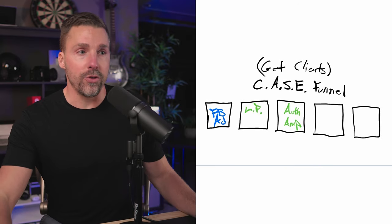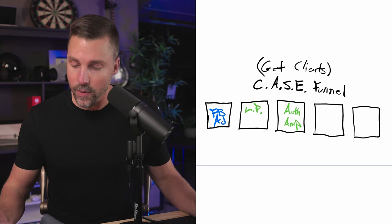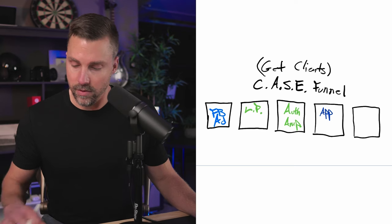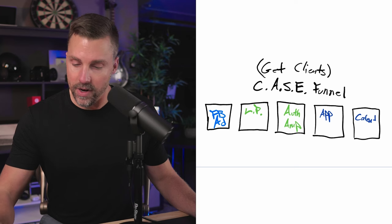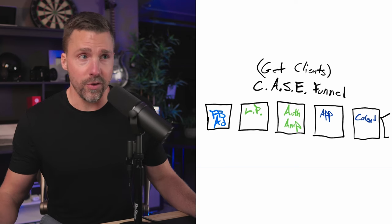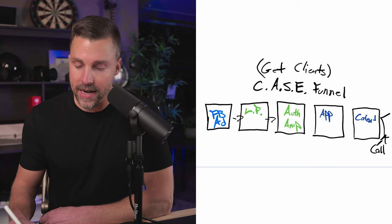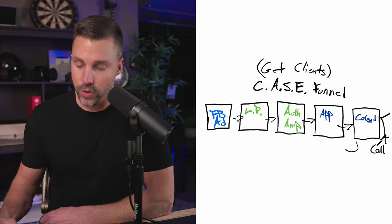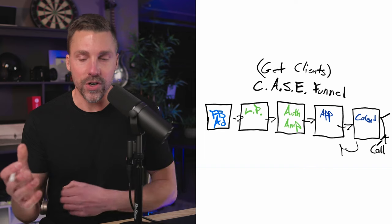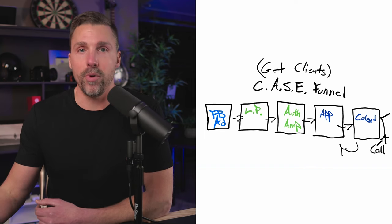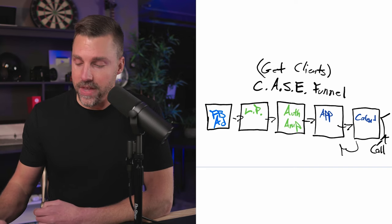After the authority amplifier, we've got a couple other steps. They're interested and bought in, so now we go to application, then calendar, then call. We guide them: Facebook ad → landing page → authority amplifier → application → calendar → call. You can swap application and calendar around — my advice is to start with application first, because then you're able to pre-qualify people and determine if they're the right fit to even get the calendar page, using logic in different softwares. Then once they're on the calendar, you complete the call.